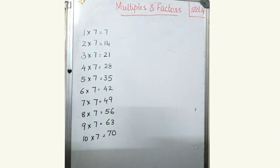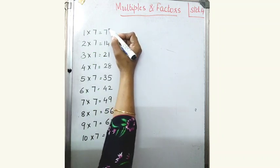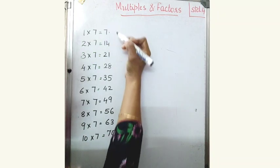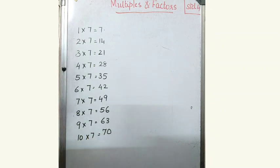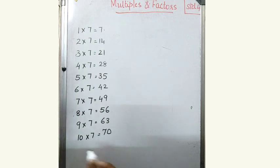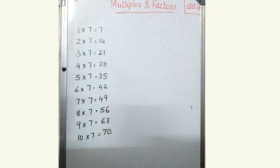Where does this number start? The number starts from 7. Does it start from 1? No. The multiples of 7 start from 7. Does it have any ending? 10 into 7 equal to 70 — is this the end? No. The number is not ending. The multiples are never ending. We can multiply it by 11, 12, 13 — like that it goes on. The smallest multiple is the number itself and we cannot find the greatest multiple; it goes on. It is infinite. It never ends.